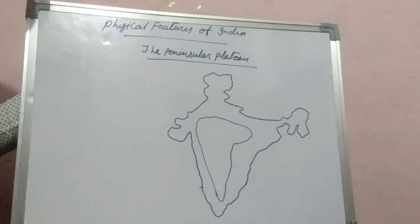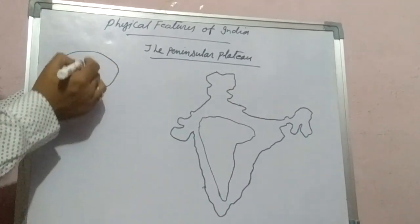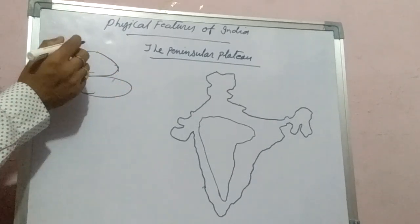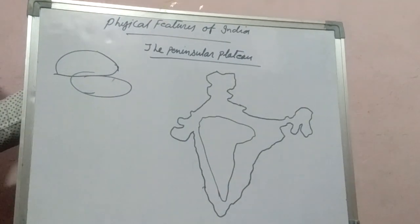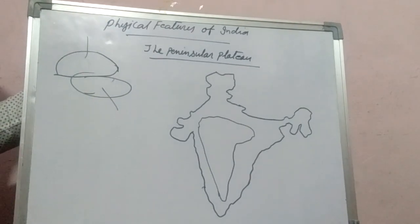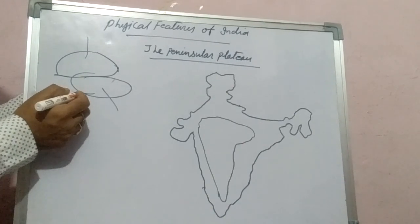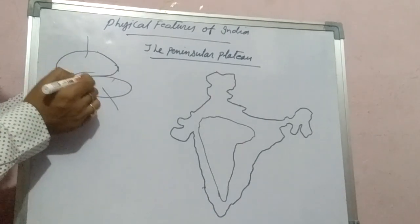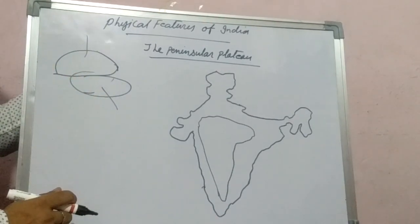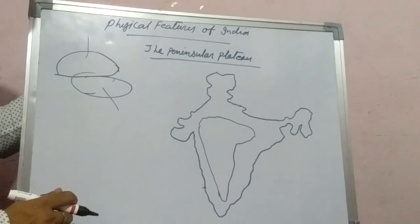When India was separated from the Gondwana land — I have told you the theory of the Gondwana land and Angara land — this plate was known as Eurasia, and this plate was known as Gondwana land, where many countries were formed after the split from Eurasia. India was one of them, along with Australia, Africa, South America, and many other countries.